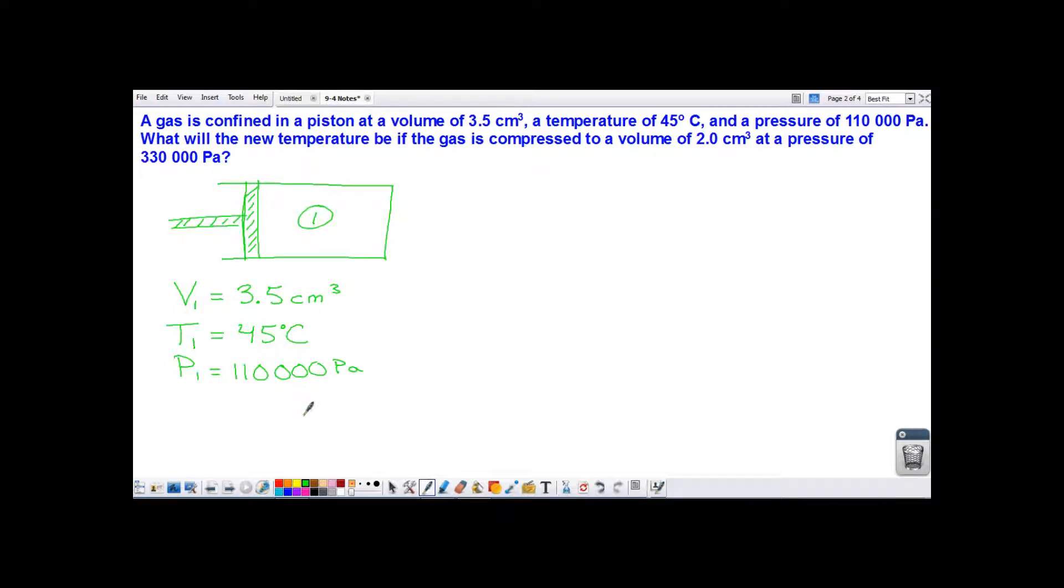We need to know what is the new temperature if the gas is compressed. So we've got my piston again, but it's compressed, so it's less volume now than what it had before. Okay, situation number 2. The new volume in situation 2 is 2 centimeters cubed, and the new temperature is what we're trying to find. And the pressure is now 330,000 pascals.